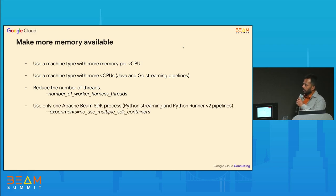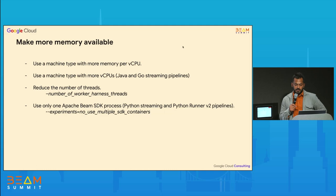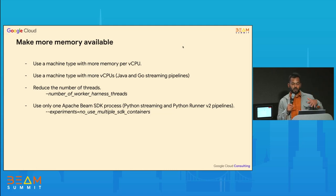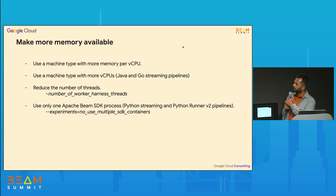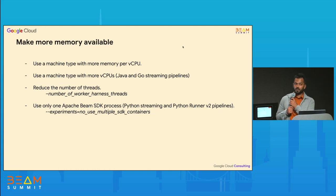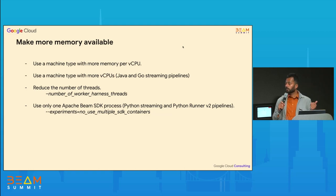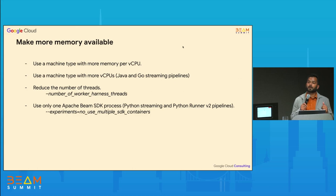The other option, applicable for Python jobs only, is to create only one SDK process per worker — like Java. This option exists and is mentioned here, but it should only be tried if the above three options don't work. In Python, if you create one SDK process per worker, you're not using the other cores on the machine. You are still paying for the vCPUs but they're not doing any computation, so it's an expensive way of making memory available.